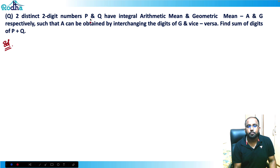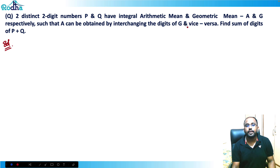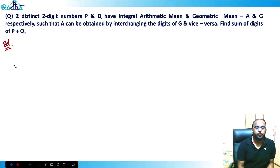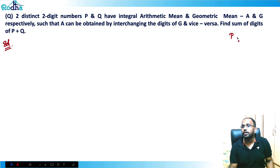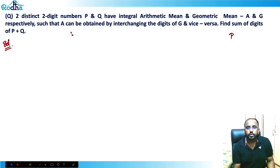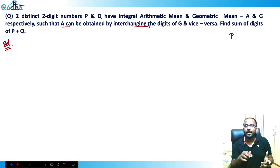Two distinct two-digit numbers p and q have an integral arithmetic mean A and geometric mean G respectively, such that A can be obtained by interchanging the digits of G and vice versa. Find the sum of digits of p plus q. Now, for two two-digit numbers, their arithmetic mean and geometric mean will also be two-digit numbers only. And since A can be obtained by interchanging digits of G, G has to be a two-digit number.